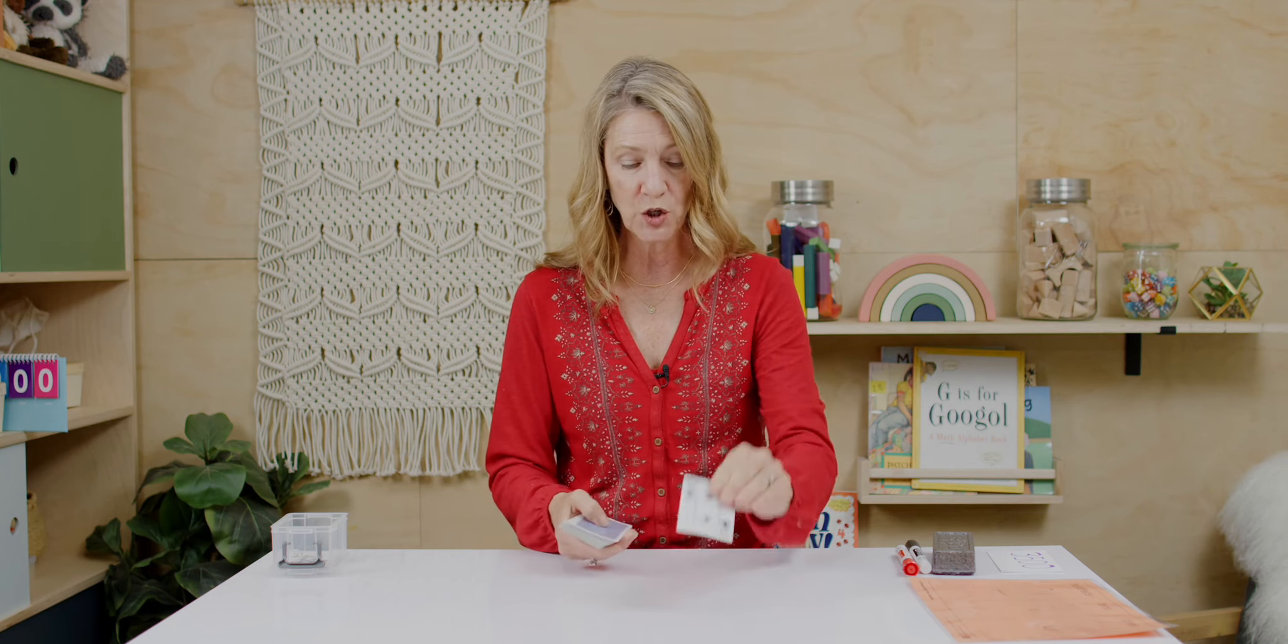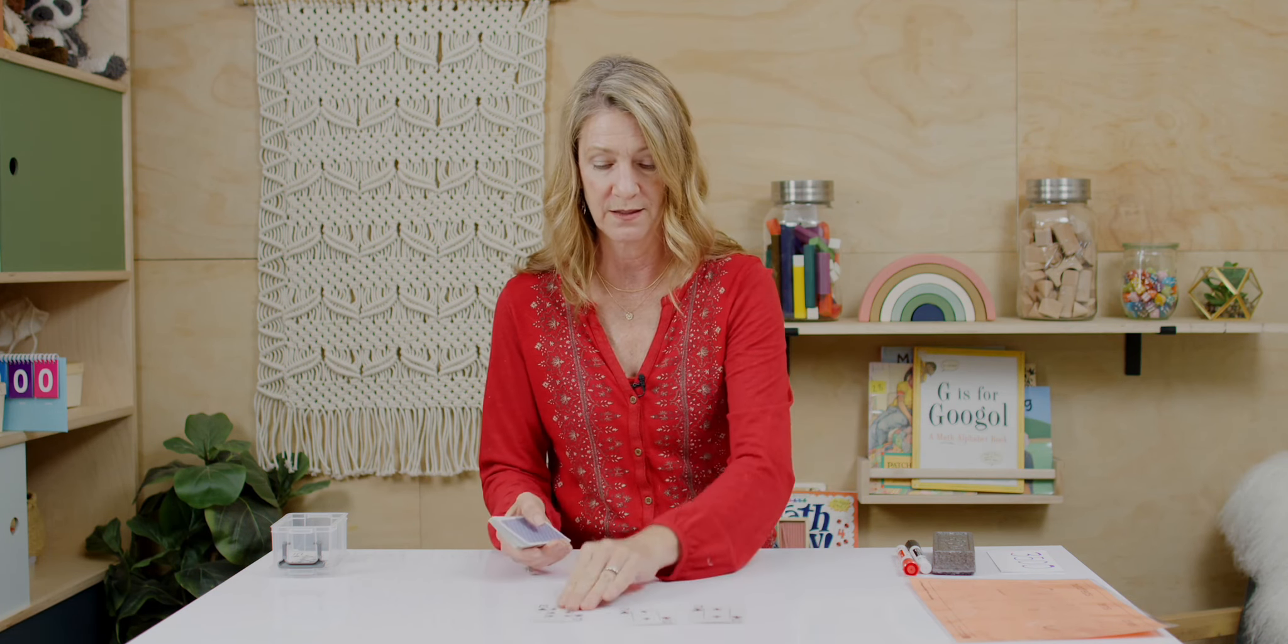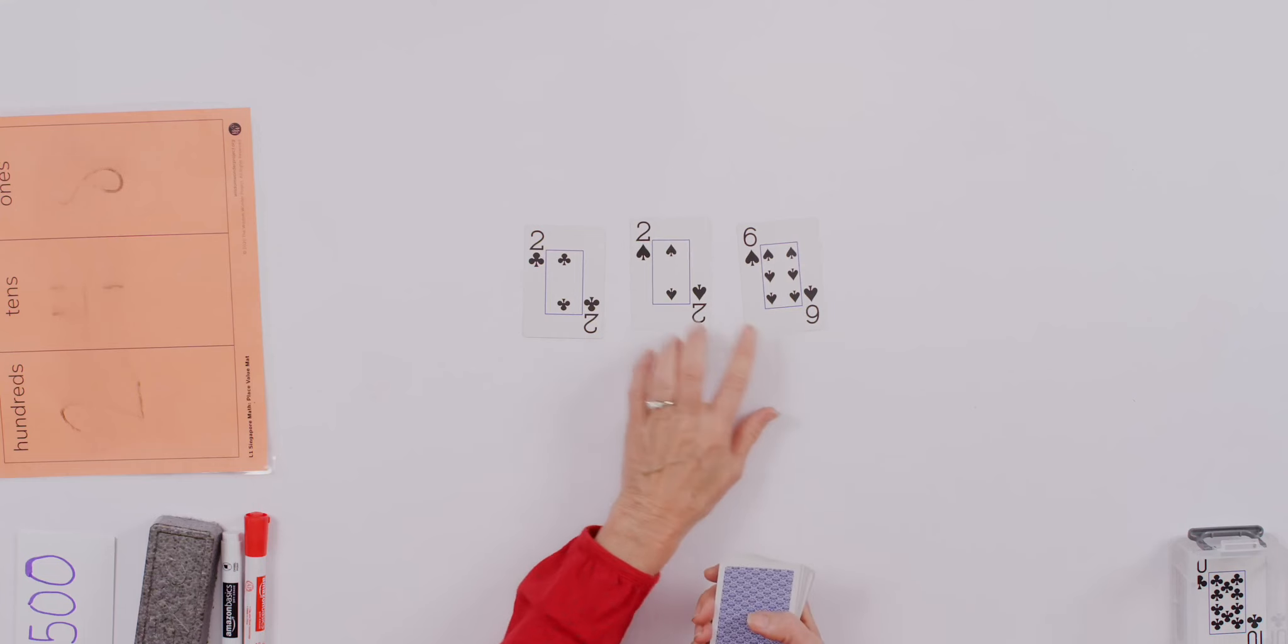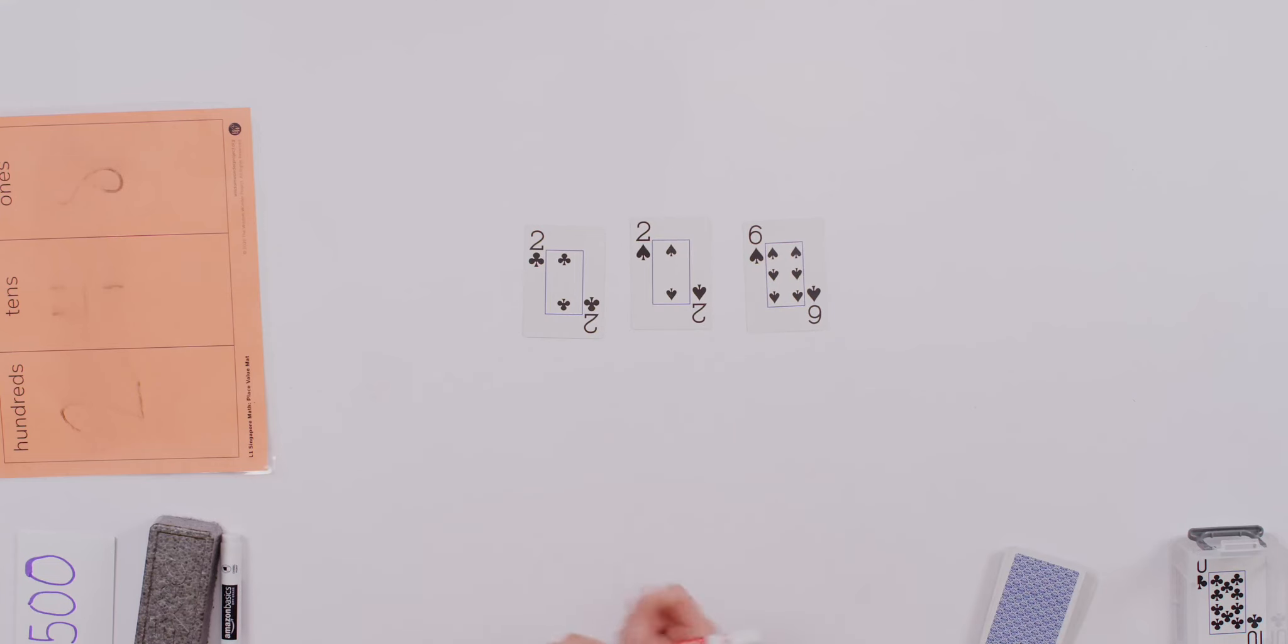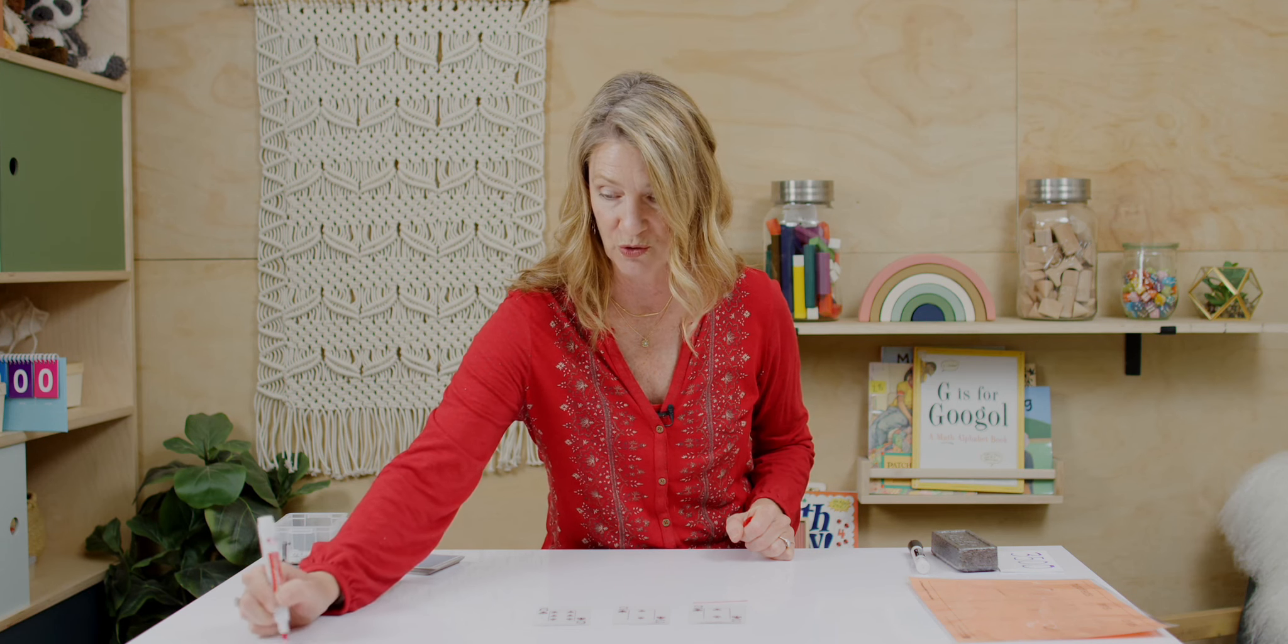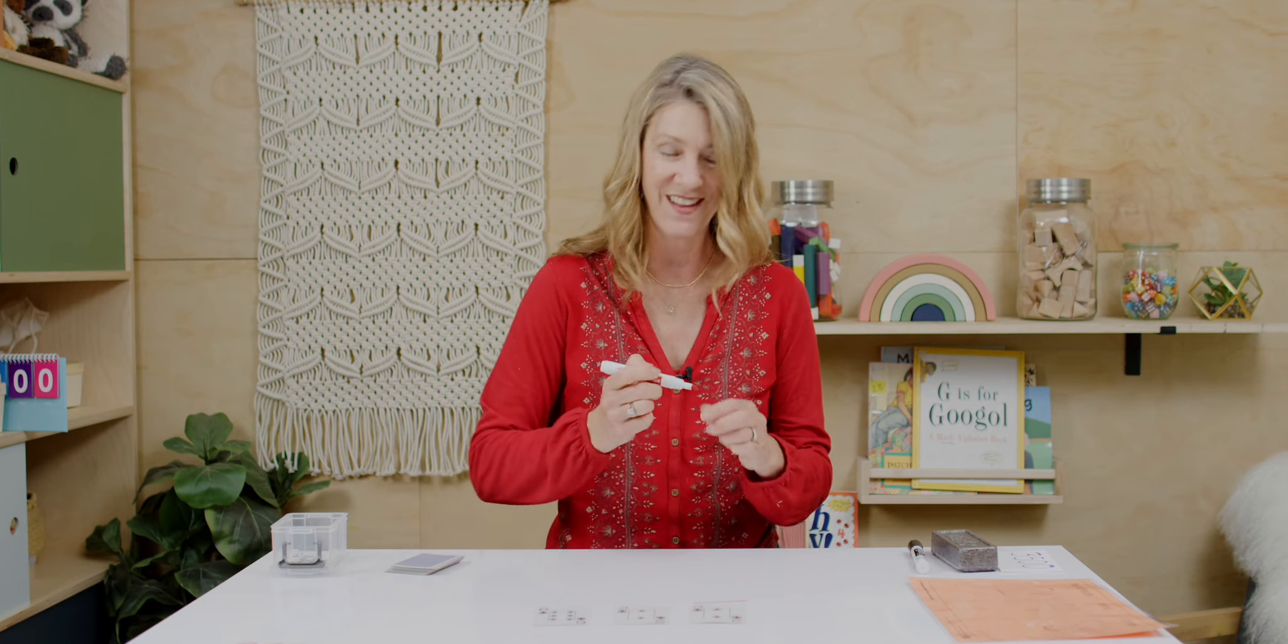But all we're going to do, and it's probably more fun to do it with a partner, is turn over three cards. Oh my goodness, look at that. Now, I'm going to, in my mind, underline here, and in my mind, point my arrow next door. I want to round to the nearest hundred. Two is below five, so I know that this number is going to round. 226 rounds to 200. All right.